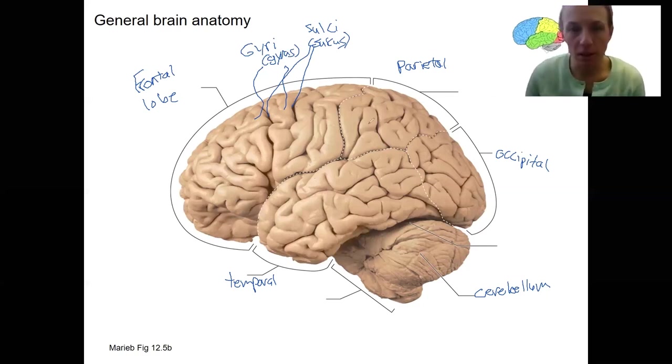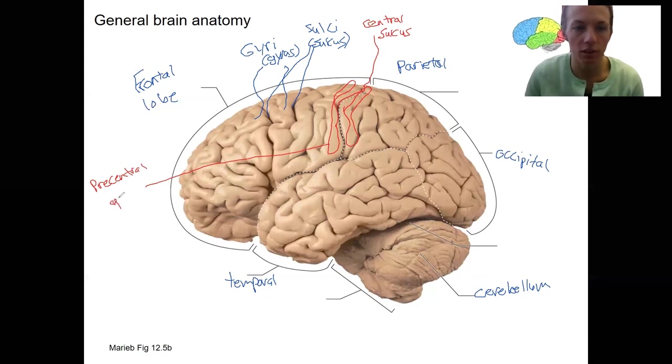And we're going to have some names of some very specific gyri and sulci. One of these is going to be this gyrus, either one right in the middle. This is called, I'm sorry, this is the sulcus right in the middle because the sulcus is the groove, right? This is called the central sulcus. And it is surrounded by two gyri, two ridges. There's a gyrus right here and a gyrus right here. So the one that's in front of the central sulcus is called the precentral gyrus. And the gyrus that is just behind the central sulcus is called the postcentral gyrus. These are going to have functions that we'll talk about later.